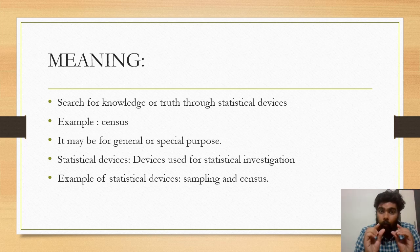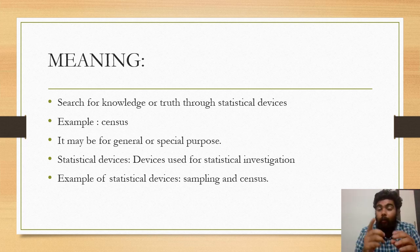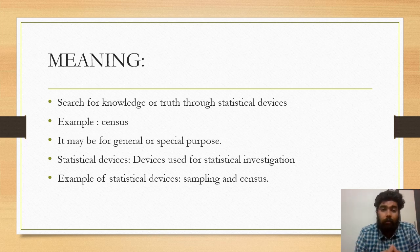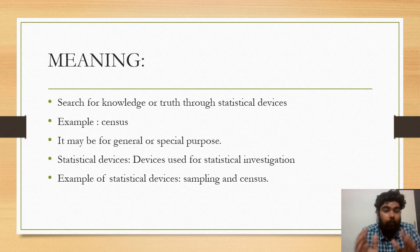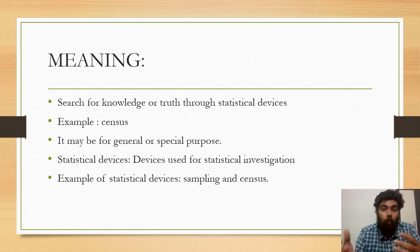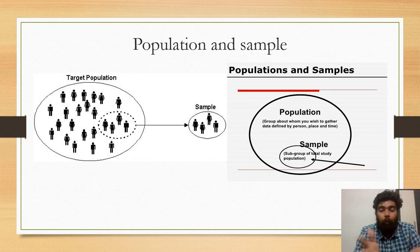A family or an individual represents a specific purpose. Statistical devices are used for statistical investigation. Examples of statistical devices include sampling and census. Statistical enquiry means a search for knowledge or truth through statistical devices, conducted for either a specific or general purpose. I will write these in the notes.